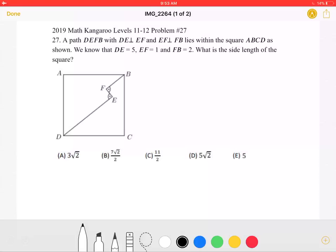This is the 2019 Math Kangaroo Levels 11-12, problem number 27. A path DEFB with DE perpendicular to EF and EF perpendicular to FB lies within square ABCD, as shown.